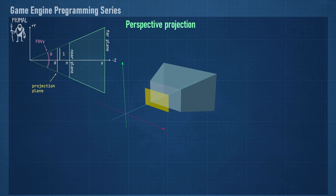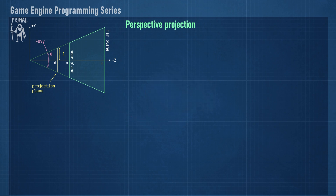If we choose a height of 2, it will have the same height as the NDC box and then we only have to rescale it in the horizontal direction using the aspect ratio. Another important property is the vertical field of view. Looking at the frustum from the side, we see that the projection plane has a distance d from the origin. We can eliminate having to deal with this distance in our equations by using the vertical field of view. We also need to encode the depth value of each point in the frustum in a range from 0 to 1, so we need the near plane and far plane values. To sum up, the only properties we need are the aspect ratio of the projection plane, the vertical field of view, and the near and far plane distances.